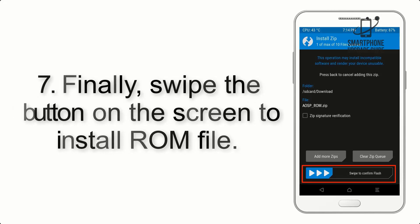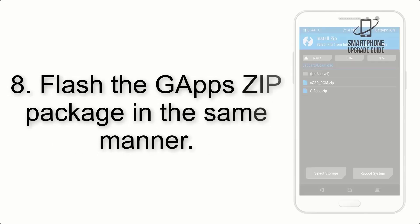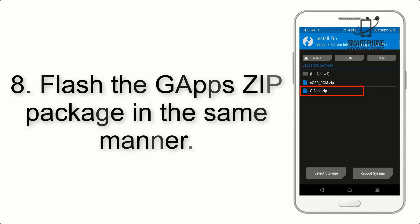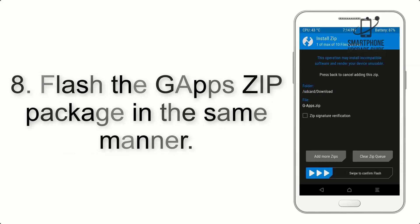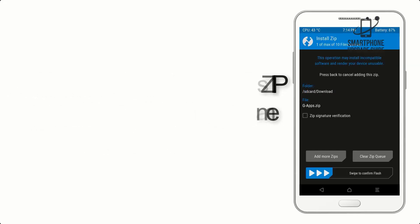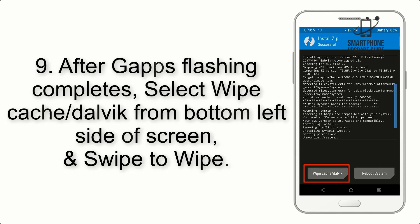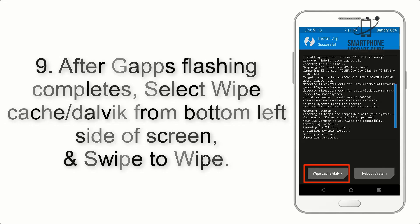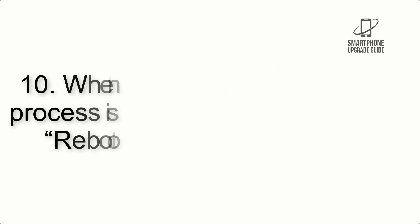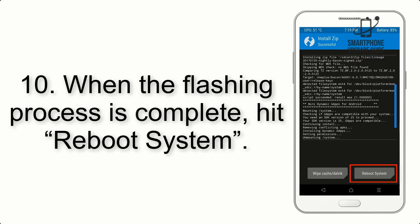Step 7: Swipe the button on the screen to install the ROM file. Step 8: Flash the GApps zip package in the same manner. Step 9: After GApps flashing completes, select Wipe Cache and Dalvik from the bottom left side of the screen and swipe to wipe.